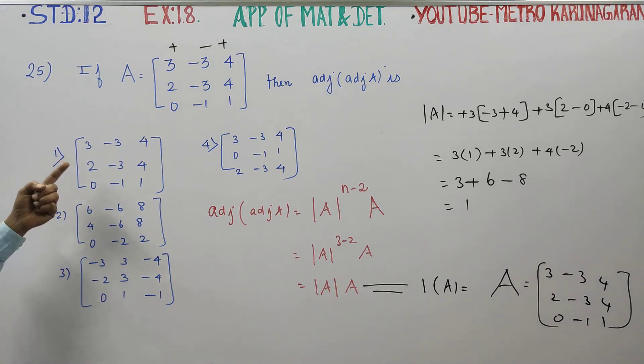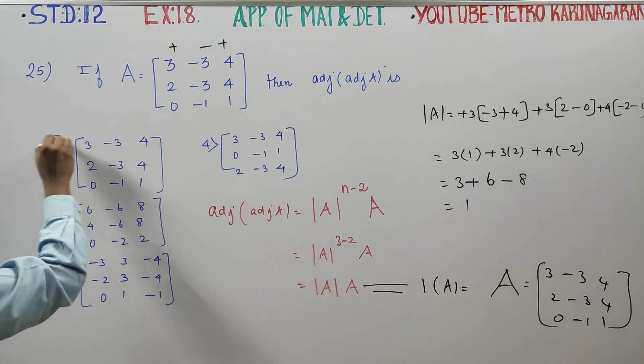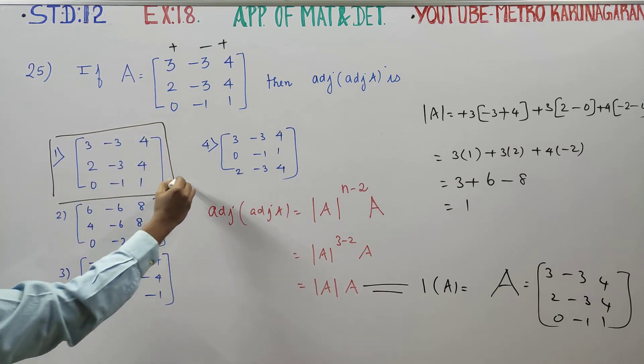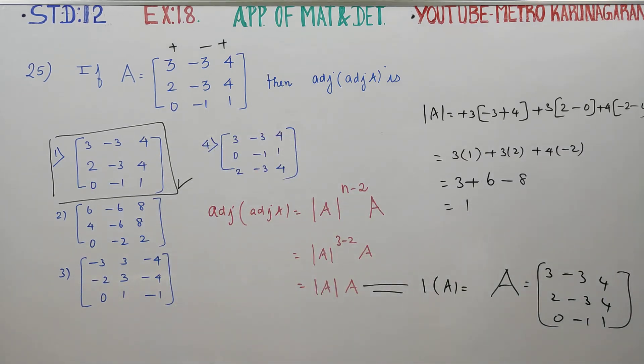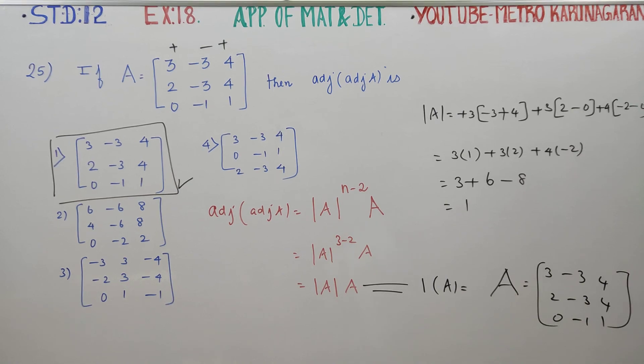In the option, how are you going to say? First option is A matrix. Therefore your exact answer will be the first option. The formula is adjoint of adjoint A is determinant A power n minus 2 into A. In the formula you substitute to get the answer. Thank you.